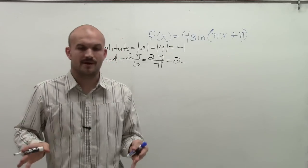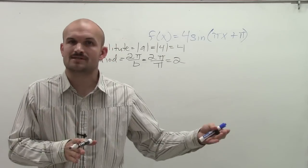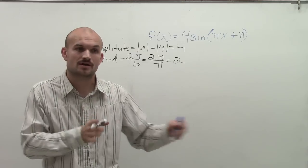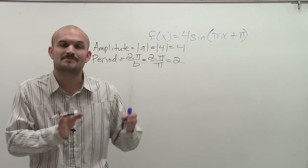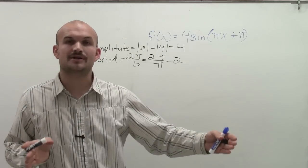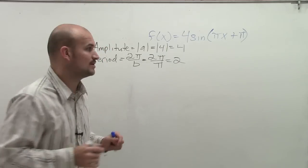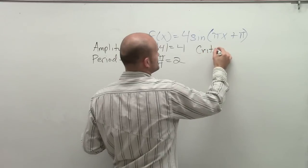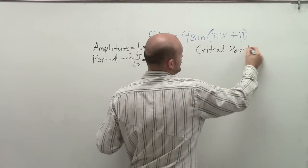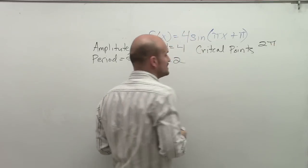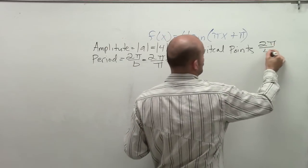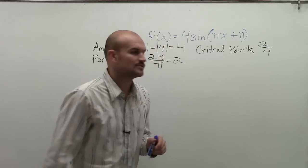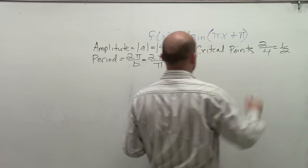If you remember the parent function, we want to determine what our critical points are. Our critical points are equal distances away from each other. On our parent graph there are four critical points: our maximum, our minimum, and our intercepts. To find the distance between them, I take the period and divide it by four critical points. Our period is 2, divided by 4, which tells us the distance between each critical point is one half.